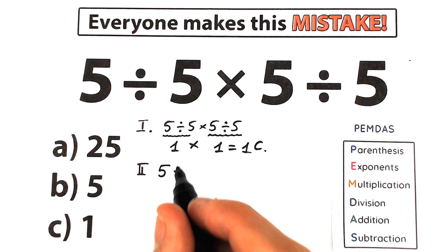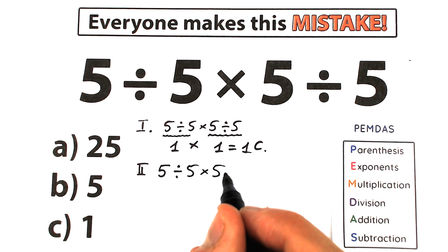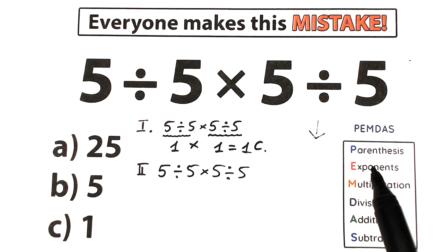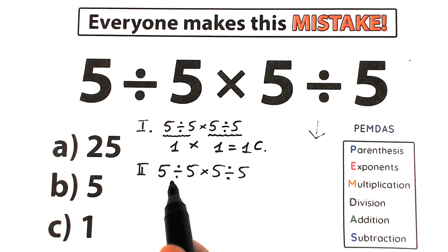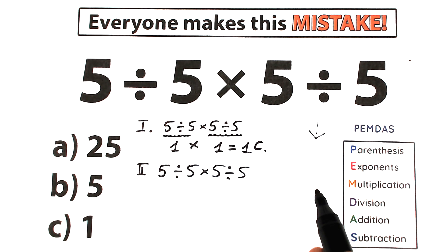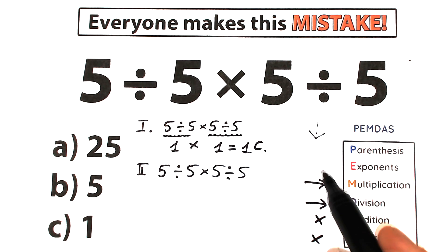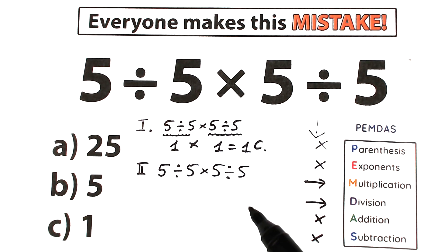So in the second interpretation we have: 5 divided by 5 times 5 divided by 5. PEMDAS works from the top to the bottom, with the highest priority at the top, in strict order. Let's scan what elements we have in our challenge: we have division, multiplication, and once more division. We don't have addition, subtraction, exponents, or parentheses — only division and multiplication.